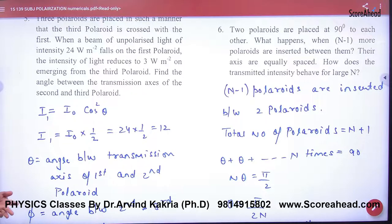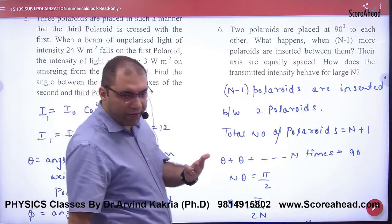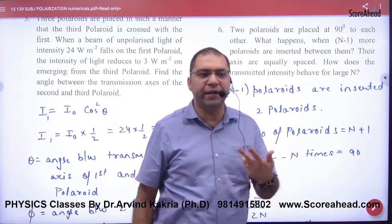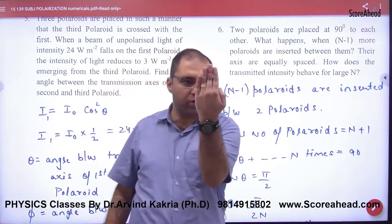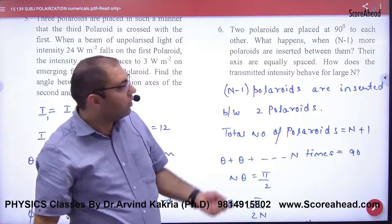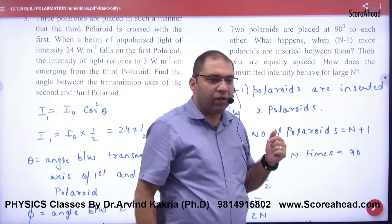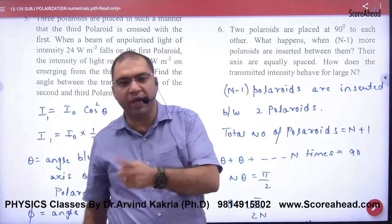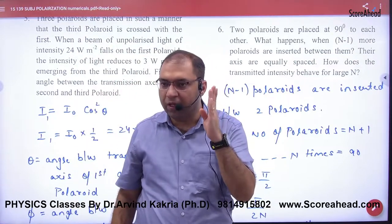In the sixth numerical, two Polaroids are placed 90 degrees to each other. So one Polaroid is like this and one like this. The angle between both is 90. In these two Polaroids, last time I was asked, I put one Polaroid. How many Polaroids were placed in it? N-1.